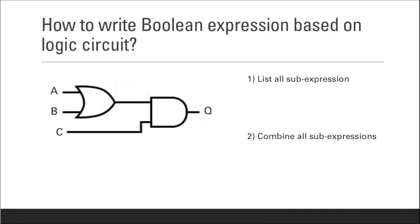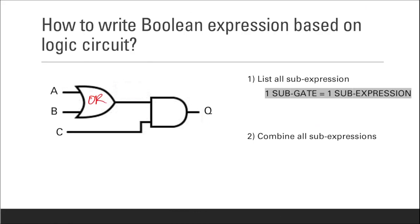Let's look at the first step. In this logic circuit there are two gates but only one sub-gate, and one sub-gate equals one sub-expression. The first gate is an OR gate taking inputs A and B, so the first sub-expression is A plus B.